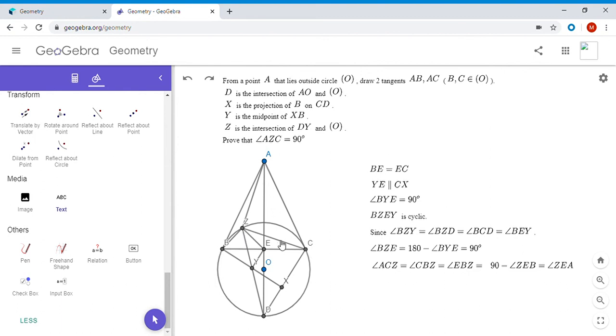Okay, but CBZ is EBZ. But we know that this is a right triangle right here, so angle EBZ has to be 90 minus ZEB. And 90 minus ZEB is ZEA, because AEB is the right angle.